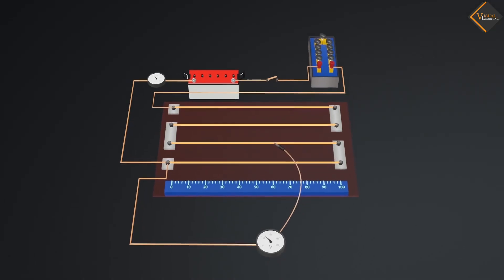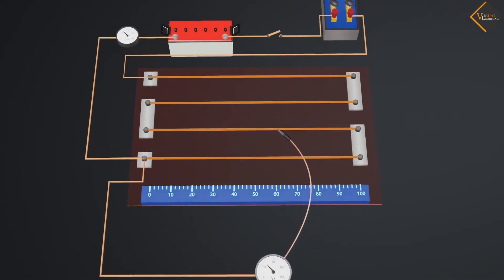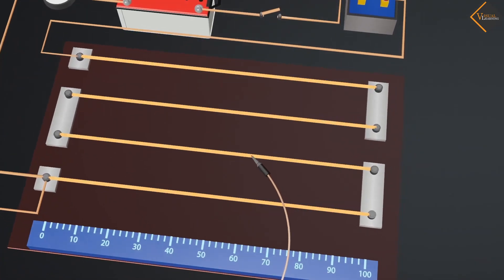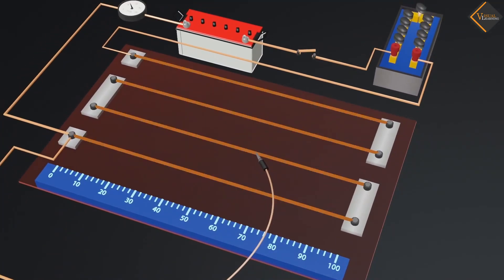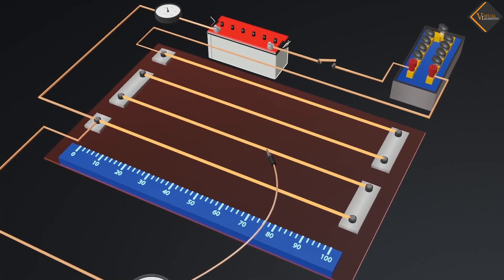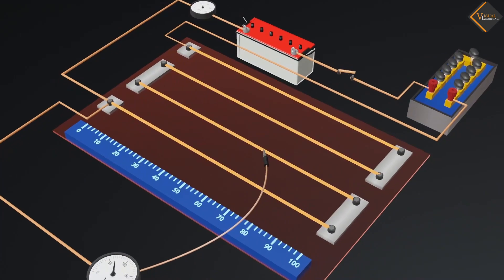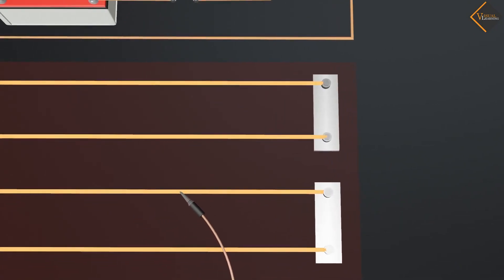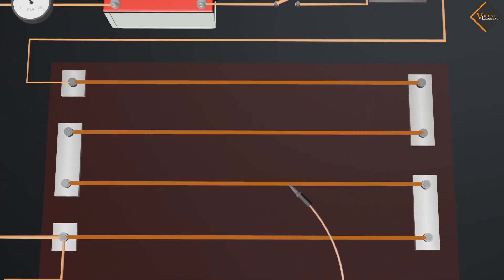The potentiometer basically consists of a long uniform wire connected to a standard cell. In the actual design of the potentiometer, this wire is divided into several pieces and placed side by side. Thick metal strips are used to connect all the pieces of wire.